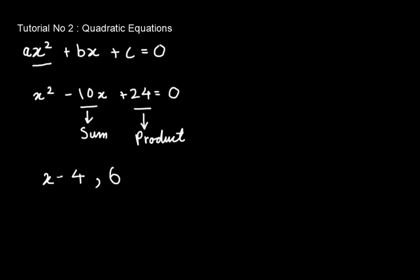So x becomes 4 or 6. Now consider the second equation: x² + 3x - 10 = 0.